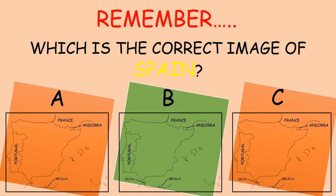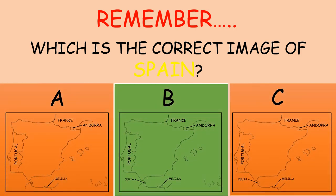And the correct image of Spain is B. Why? Because image A is missing Ceuta, and in image C, it is missing Canarias.